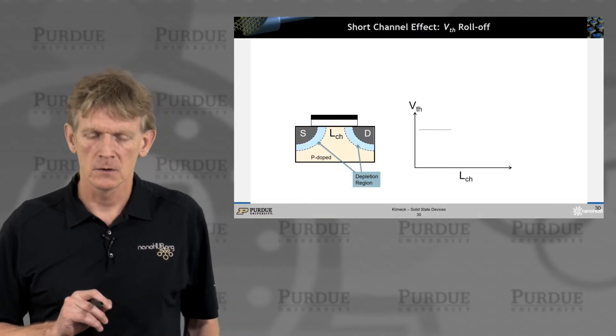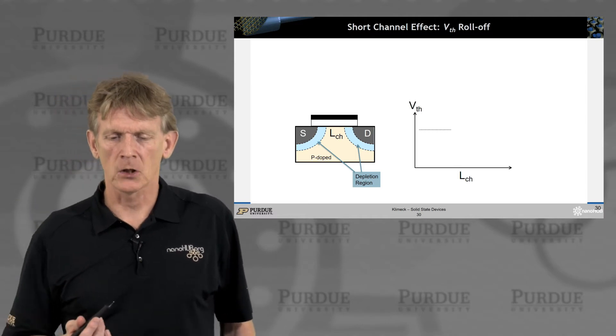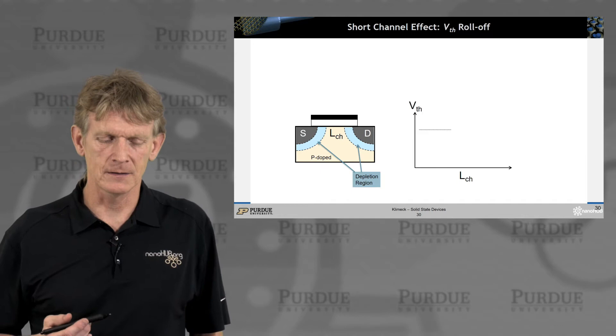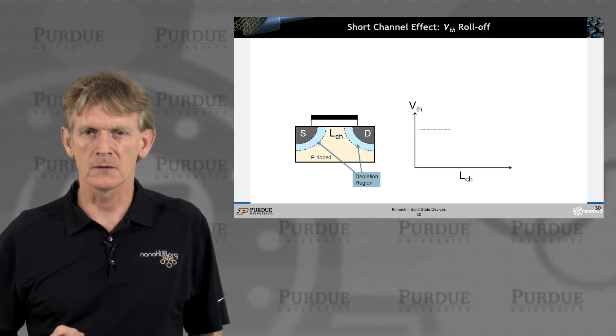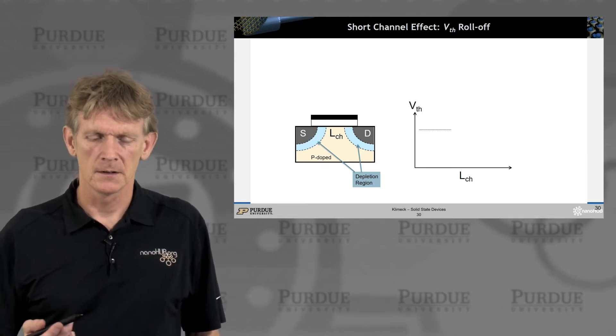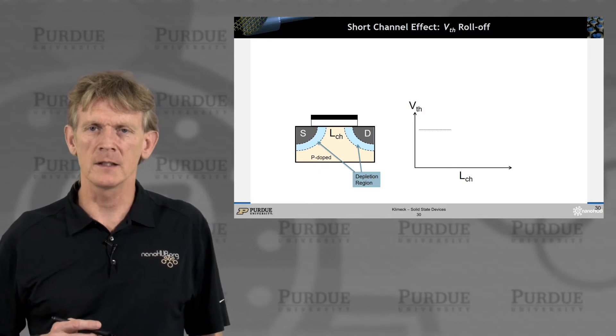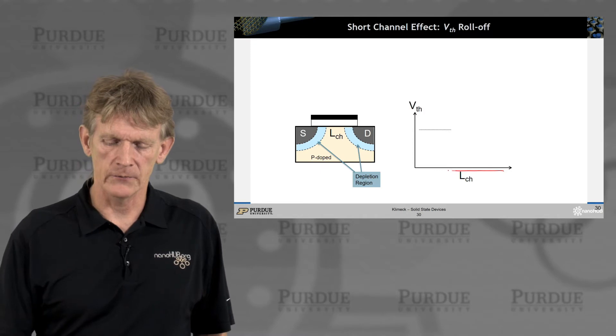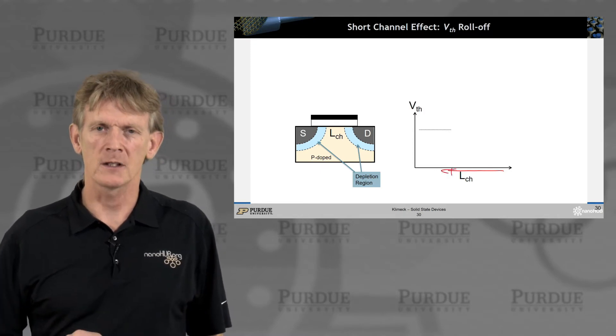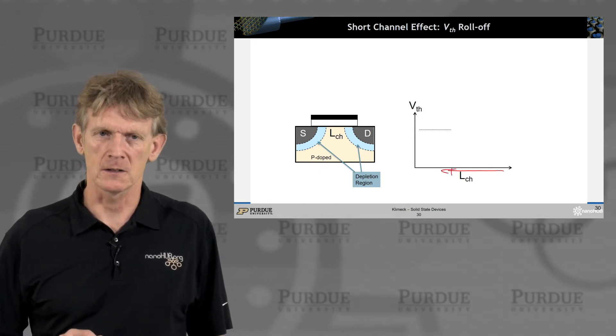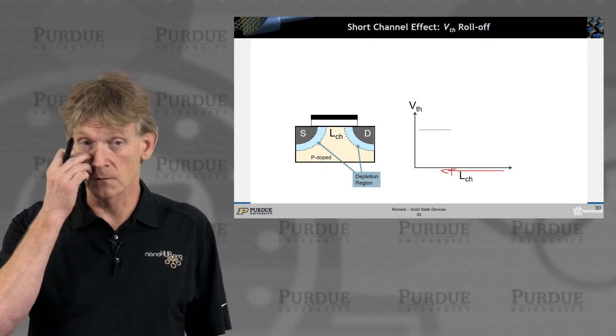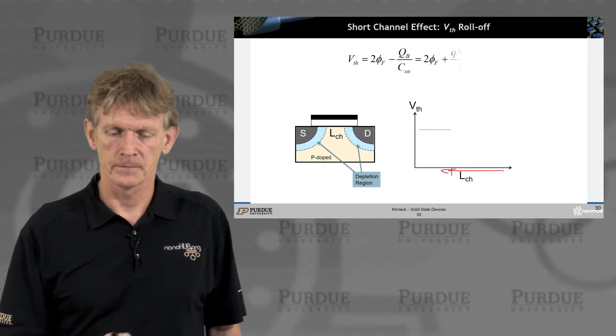How can you calculate this more analytically to get some insight, so it doesn't just come out of the simulator? There's something called a V threshold roll-off. As you make the channel smaller and smaller, that's the scaling direction, what happens to your threshold voltage? That's the voltage at which you begin to invert your channel.